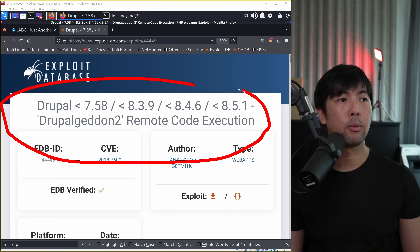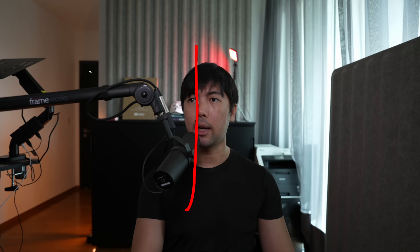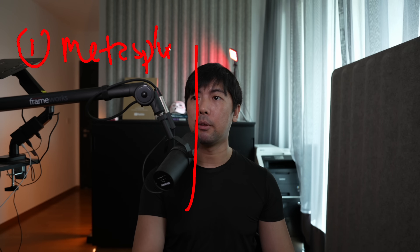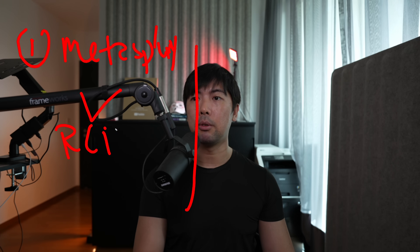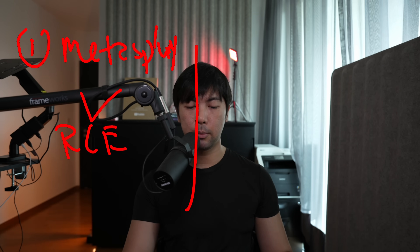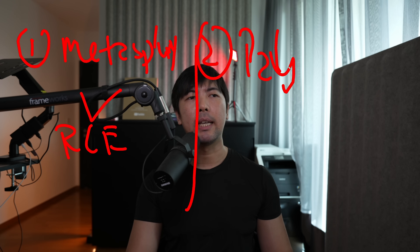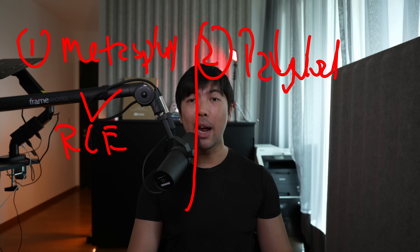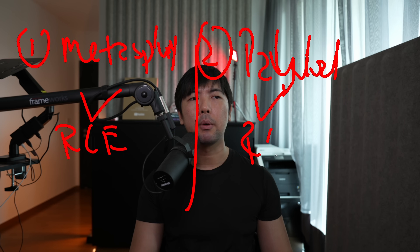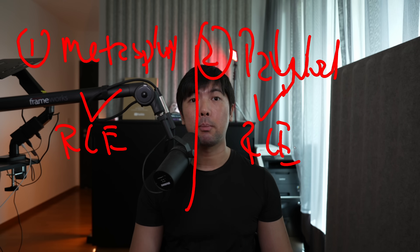We can see Drupageddon - remote code execution. We're using this one to target the site. We have two options: one is we can directly run this using Metasploit because the exploit is available from it, which is very easy and gives us remote code execution. The other option is to craft our own manual payload directly against the site so we can run certain commands - this is manual exploitation of the vulnerability. Either way, we're still hacking.